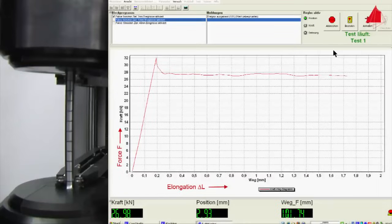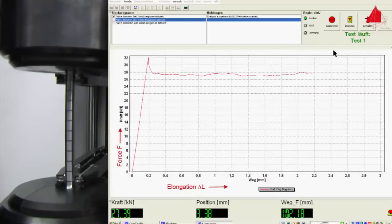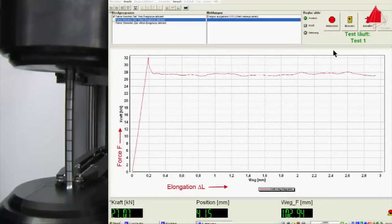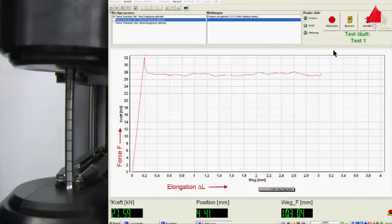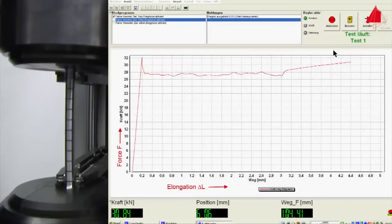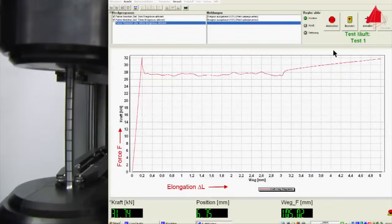In the next stage of the tensile test, an almost constant force level with slight fluctuations occurs. This phenomenon is called the Lüders effect. After a certain strain known as the Lüders strain, the force increases again. The material opposes an increasing force against the imposed elongation. It strain hardens.